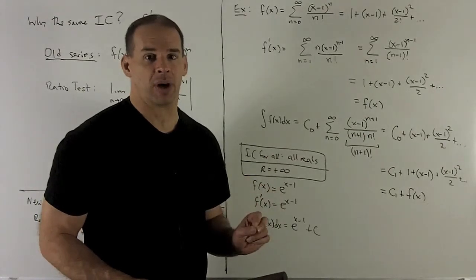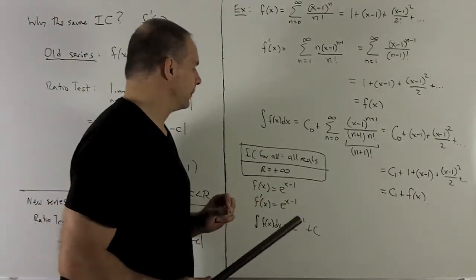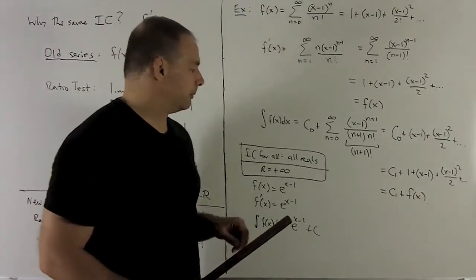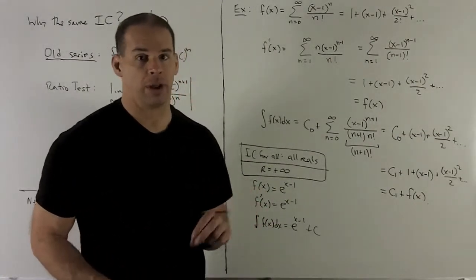So since there's no endpoints, that's just going to be the same for the derivative and the antiderivative. So in all three cases, radius of convergence is going to be plus infinity. Interval of convergence, all real numbers.